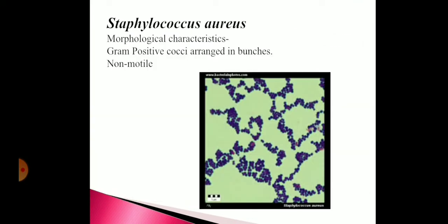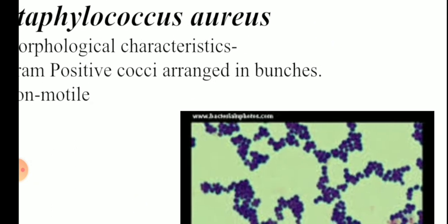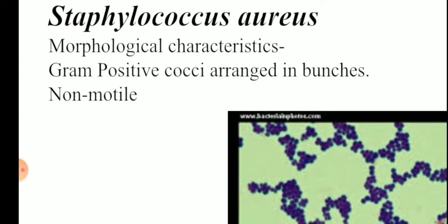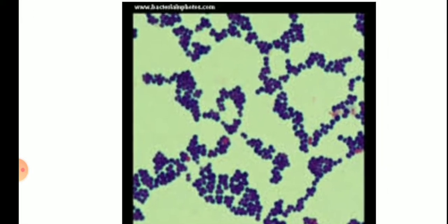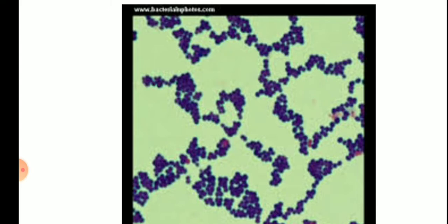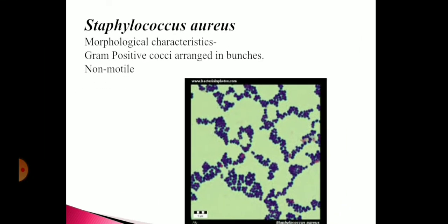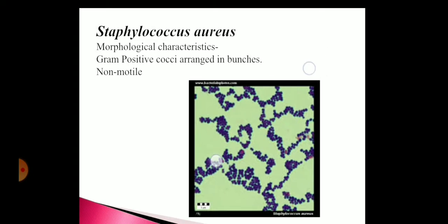The next organism we are going to discuss is Staphylococcus aureus. Here also you are given a culture and must identify the organism by morphological, cultural, biochemical characteristics, and enzyme tests. For morphological characteristics, we perform gram staining and motility. Staphylococcus aureus is gram-positive cocci arranged in bunches — grape-like clusters visible under the microscope. All cocci are non-motile, and this organism is also non-motile because it is non-flagellated.